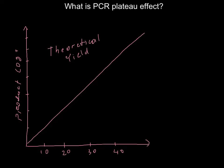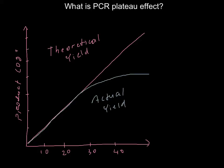Here is going to be the actual yield. As you can see, between 20 and 30 thermocycles we have separation of these two lines, and this is the plateau effect — where with more thermocycles we do not see further accumulation of the final product.